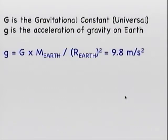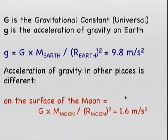We can do the same thing for other objects. So we can compute the acceleration of gravity on the surface of the Moon, for example. That would be the universal constant, always the universal constant, times the mass of the Moon divided by the radius of the Moon squared. So on the Moon, the acceleration of gravity is 1.6 meters per second squared.